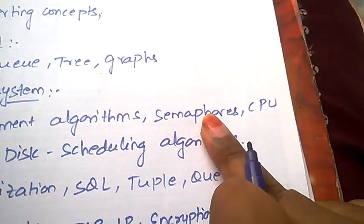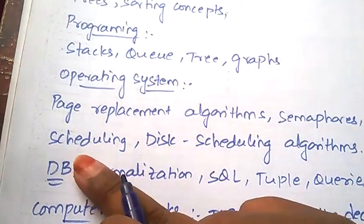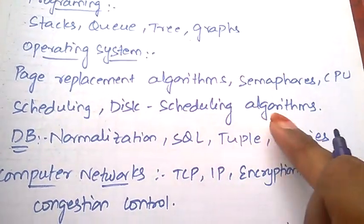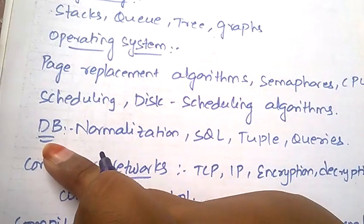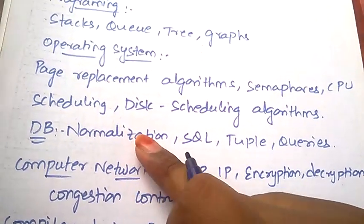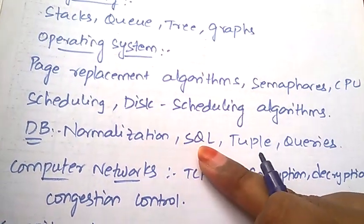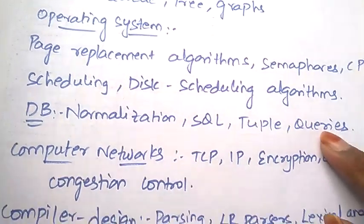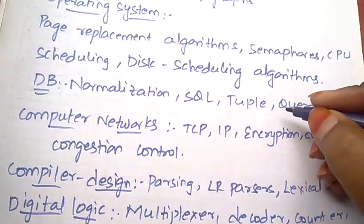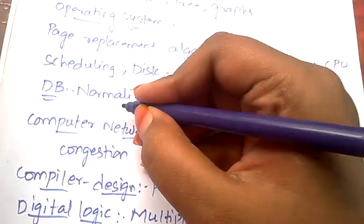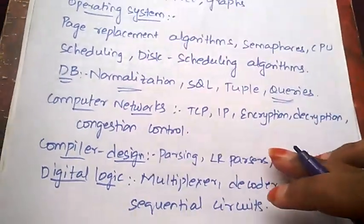Algorithms, semaphores, CPU scheduling, and disk scheduling algorithms. Now coming to Database Management System, the important topics are normalization, SQL, and tuple queries. Queries will be asked which are very important, and normalization is a very important topic.